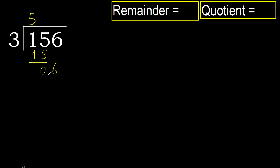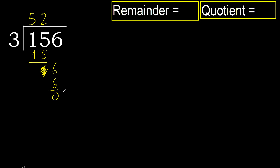Bring down the 6. 3 multiplied by 2 is 6, which is not greater. Subtract — remainder is 0. Next, there is no number.